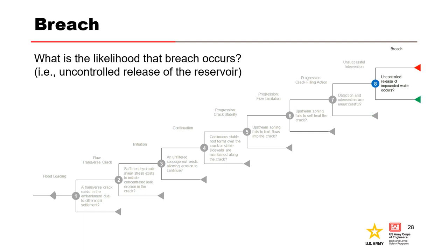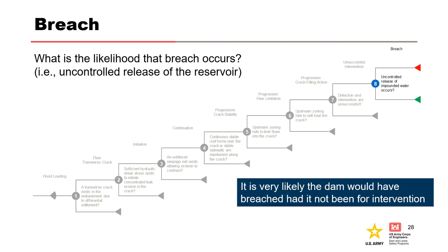For Node 8, the last node in the event tree: What is the likelihood that the uncontrolled release of the reservoir occurs? If intervention had not been successful, Worcester Dam would have almost certainly breached by gross enlargement of the leakage pipes, leading to collapse of the overlying embankment and overtopping. Breach was averted because the reservoir was lowered below the erosion tunnels, arresting the failure mode development. Some gross enlargement likely occurred because the erosion rate was increasing even as the reservoir level was decreasing, as shown in the photos earlier in the presentation.